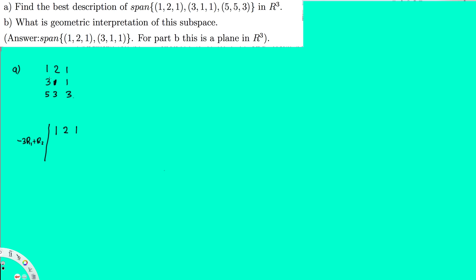To make the first entry of row 2 into 0, I can multiply the first equation by negative 3 and add it to the second equation. That gives me 0, and negative 3 times 2 plus 1 is negative 5, and negative 3 times 1 plus 1 is negative 2. Then for row 3, I multiply the first equation by minus 5 and add it to the third row, giving me 0.